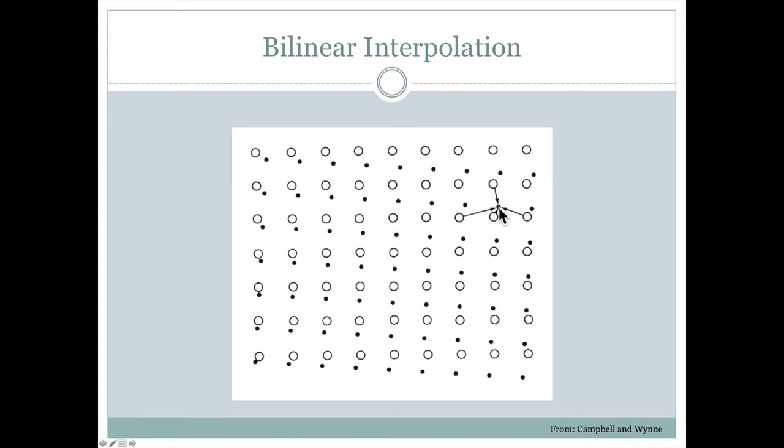We would just take our new pixel here, which is represented by this black dot. We would find the four closest pixels from the original image, and then we would take all four of those values and take an average or some sort of number associated with them to assign to this new pixel here. So bilinear interpolation, instead of just looking at the closest one, it's looking at four that are nearby and accounting for all of those.